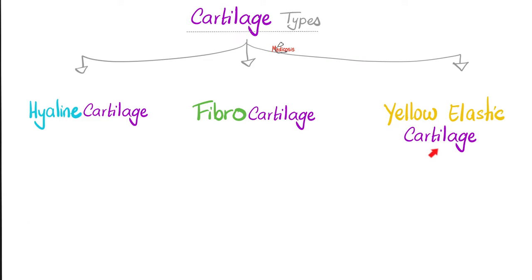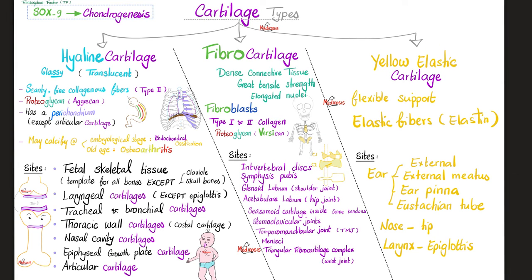Yellow cartilage, also called elastic cartilage, is very flexible and elastic because it contains tons of elastin and many elastic materials. You find it in the external auditory meatus, the external ear, the ear pinna or auricle, the Eustachian tube or auditory tube, the tip of the nose, and the epiglottis of the larynx. For the nose, only the tip is elastic cartilage — every other cartilage inside the nasal cavity is hyaline cartilage. For the larynx, only the epiglottis is elastic — every other laryngeal cartilage is hyaline.